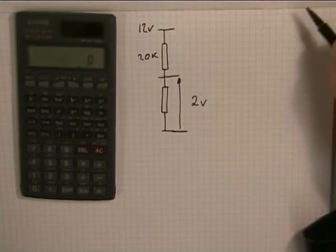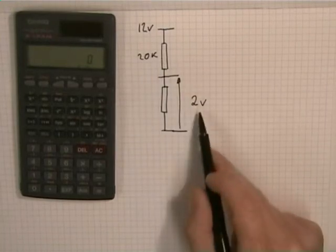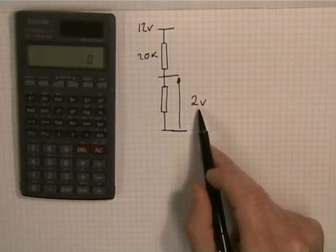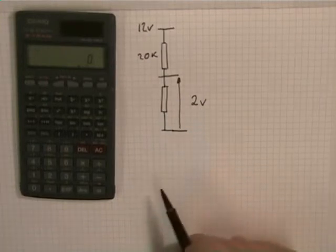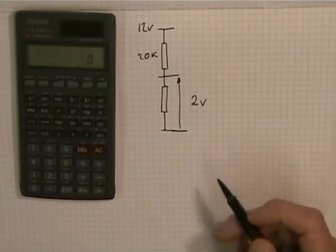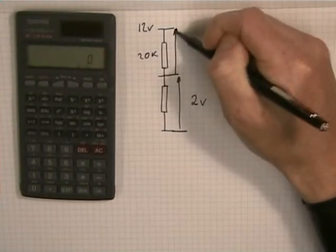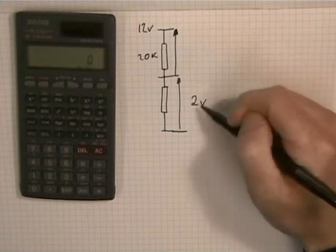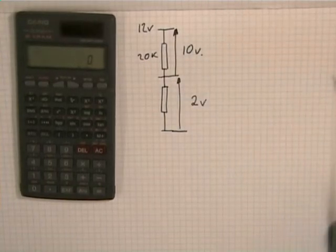Here we have another potential divider. I know that's 20k, and I know I want out 2 volts from here. I want to find the size of a resistor here that gives me an output of 2 volts. Using Kirchhoff's voltage law, that says that voltage of 2 plus that voltage there must equal the supply. So 2 plus, it'll be 10 volts, will give me the supply.